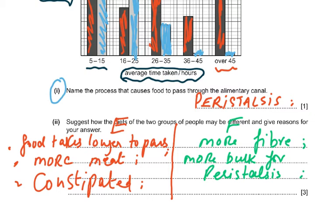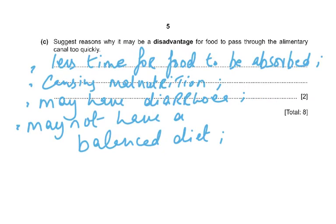Meat has no fiber, so if group E is constipated the feces stay inside for longer. Group F had more fiber — fiber adds bulk to the feces, helping push it along the alimentary canal, so it passes out of the body much faster. Eating lots of fruit or vegetables increases fiber intake.